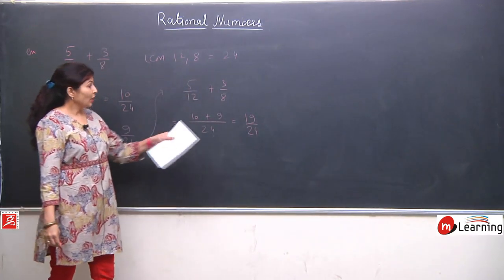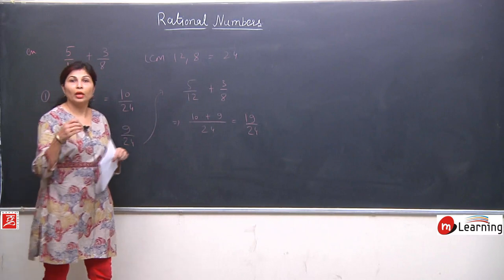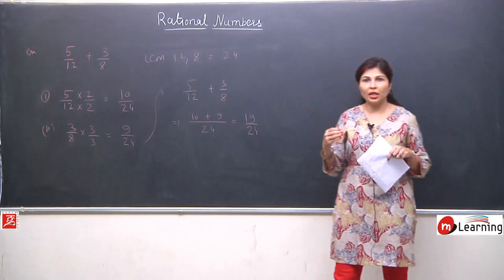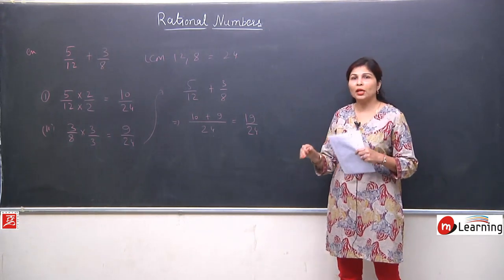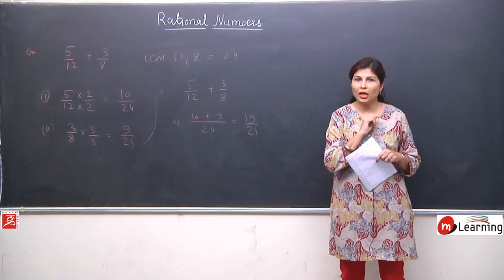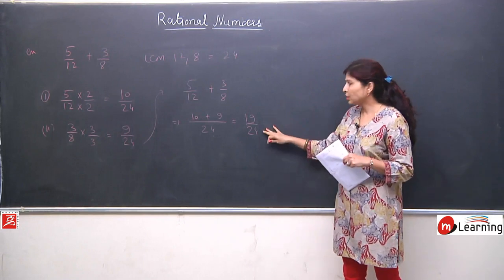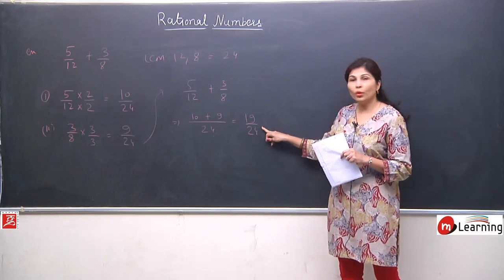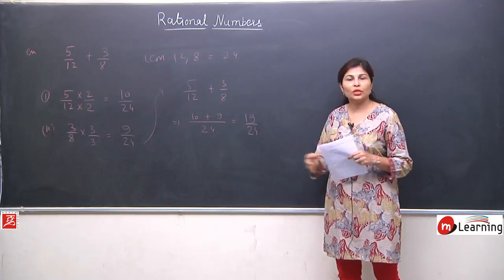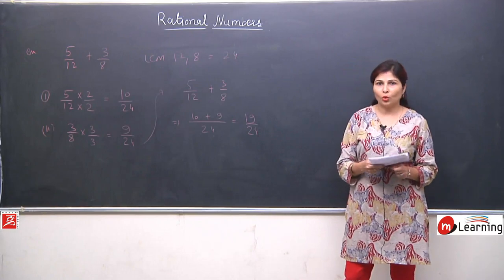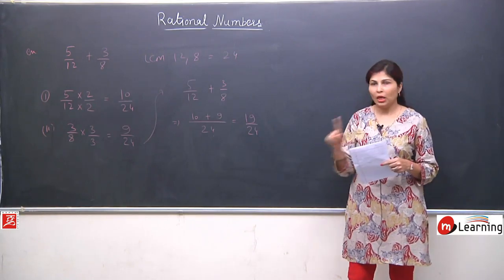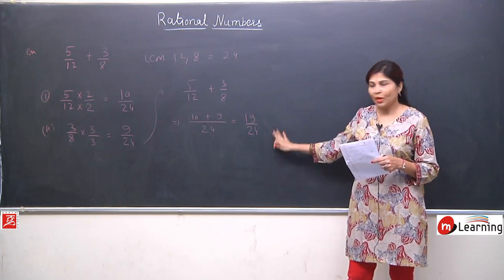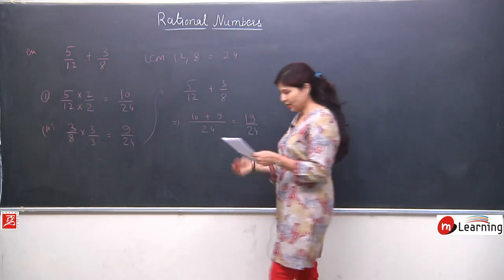So 5 upon 12 plus 3 upon 8 — LCM is 24 — becomes 10 plus 9 upon 24, which is 19 upon 24. Now we check if it can be reduced to lowest form. There is no table in which both 19 and 24 appear, meaning their common factor is only 1. So it will not reduce further, and this is our answer: 19 upon 24.